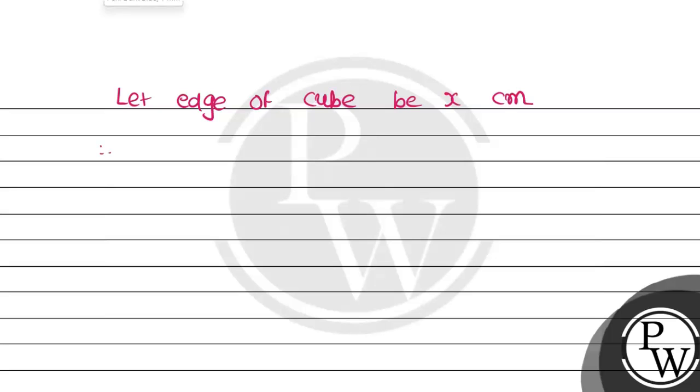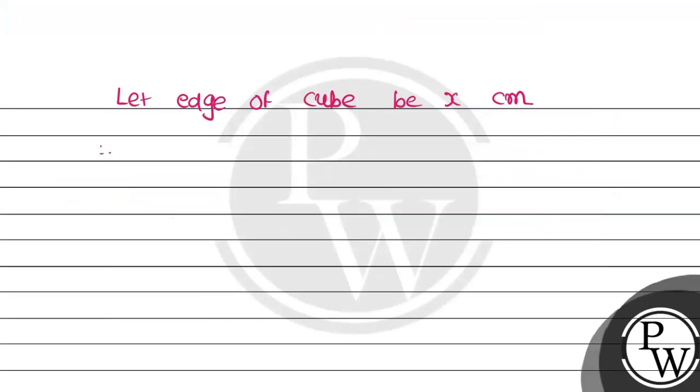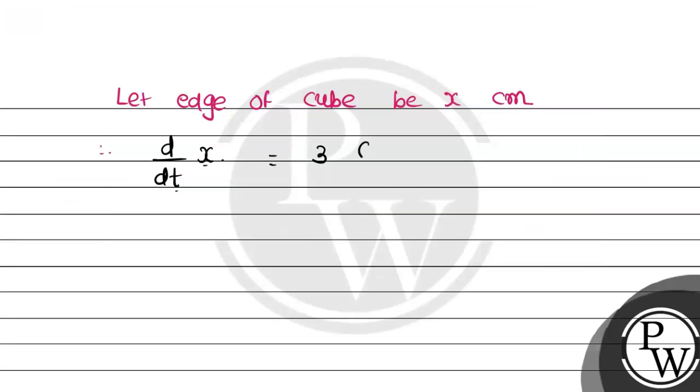This is per second, so this means with respect to time. dx/dt is the rate of change with respect to time. That will be dx/dt = 3 cm per second.